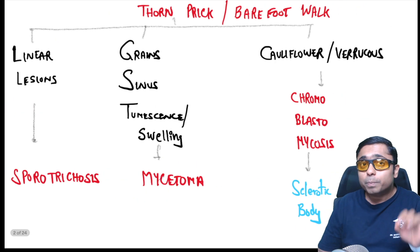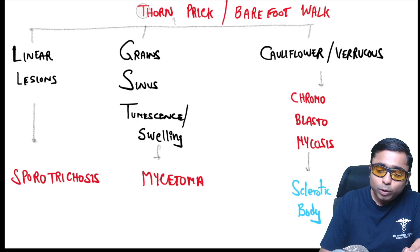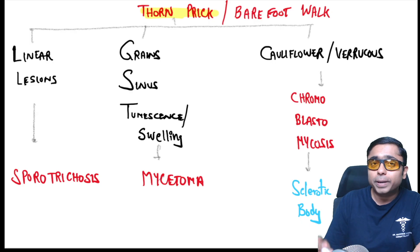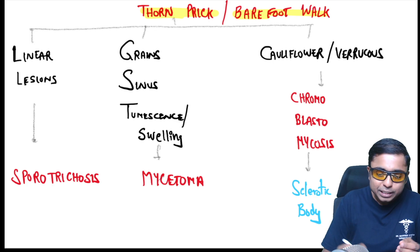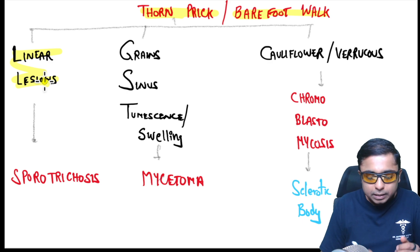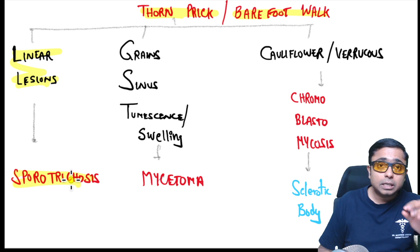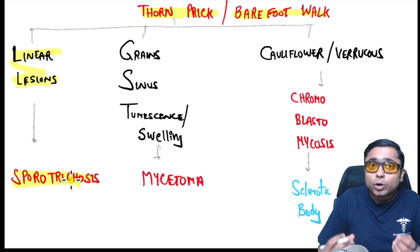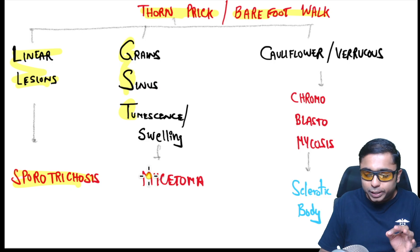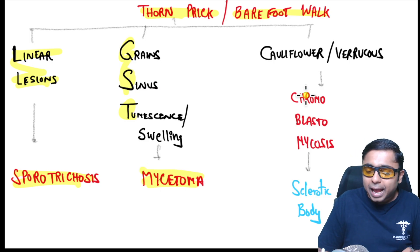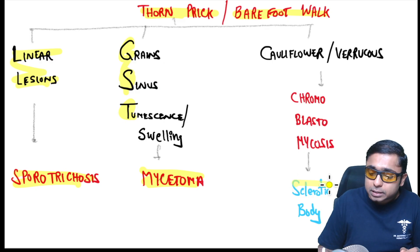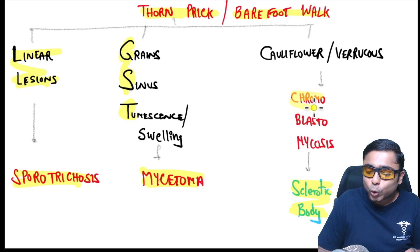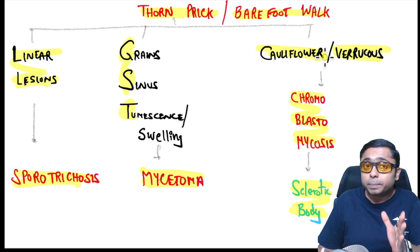Let us begin with barefoot walking or thorn prick scenarios. If there is development of linear lesions along the lymphatics and the positive organism is a dimorphic fungus, the diagnosis is sporotrichosis. If there is swelling with granules coming out through sinuses — the triad of GST — the diagnosis is mycetoma or Madura foot. If there are verrucose lesions with a rough surface and copper penny bodies, sclerotic bodies, neuriform bodies, and medlar bodies, the diagnosis is chromoblastomycosis, due to a dematiaceous fungus.